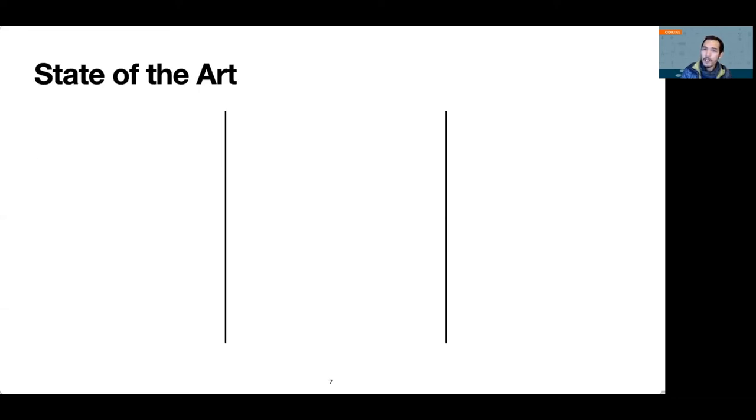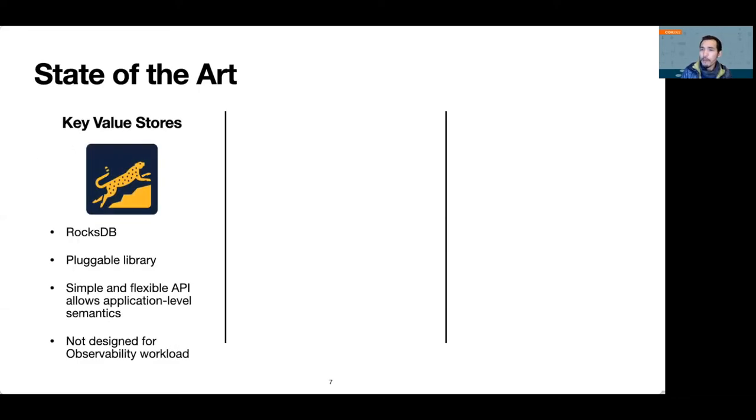We highlight three state-of-the-art storage strategies. The most general approach are write-optimized key value stores like RocksDB. These pluggable libraries provide a simple API, but are not designed with the types of data and workloads in observability. For example, LSM trees have write amplification, which severely limits its ingestion throughput.